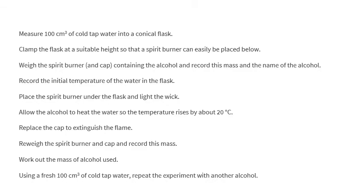The method: measure 100 cm³ of cold tap water in a measuring cylinder and transfer it to the conical flask. Clamp the flask on a retort stand. Weigh the spirit burner and record its mass. Record the initial temperature of the water. Light the wick, place it underneath, and allow the alcohol to raise the temperature by about 20 degrees. Replace the cap, re-weigh the spirit burner, record that mass, and work out the mass of fuel used. Repeat with all the other alcohols using fresh cold water every time.